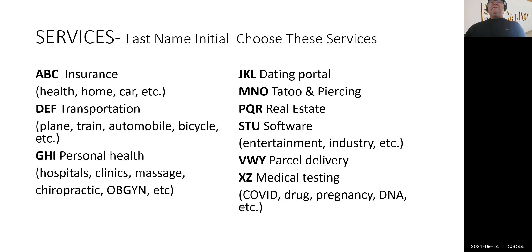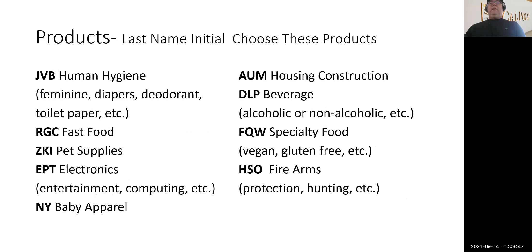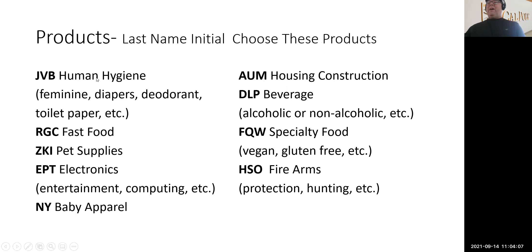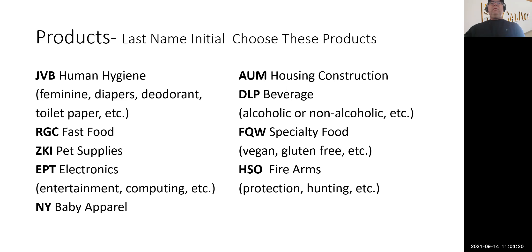You also choose a product based on your last name initial. For example, if your last name starts with J, your product would be human hygiene. Products include human hygiene, fast food, pet supplies, electronics, baby apparel, housing construction, beverage, specialty food, and firearms. You combine your assigned service and product to come up with your business concept — that's where your imagination comes in.